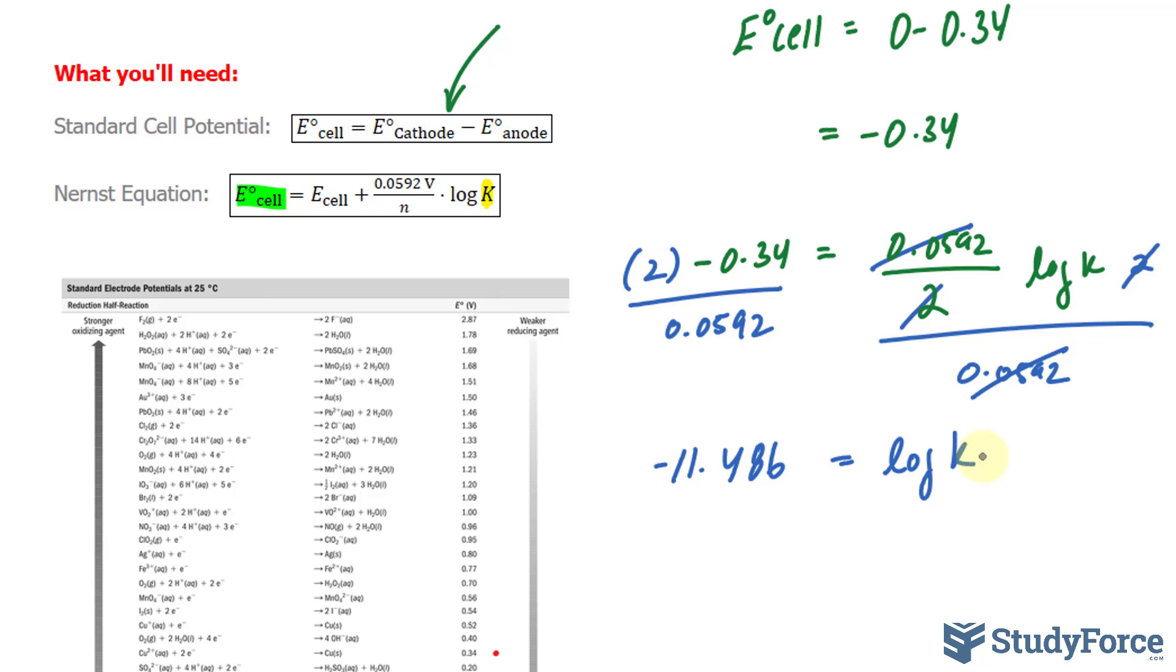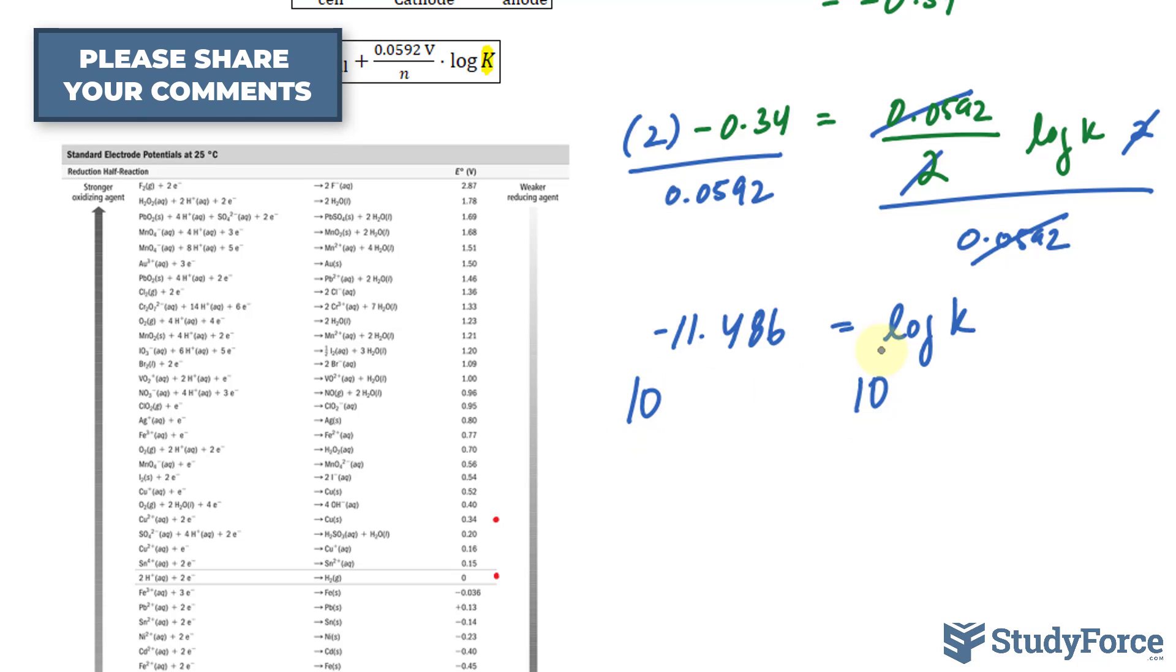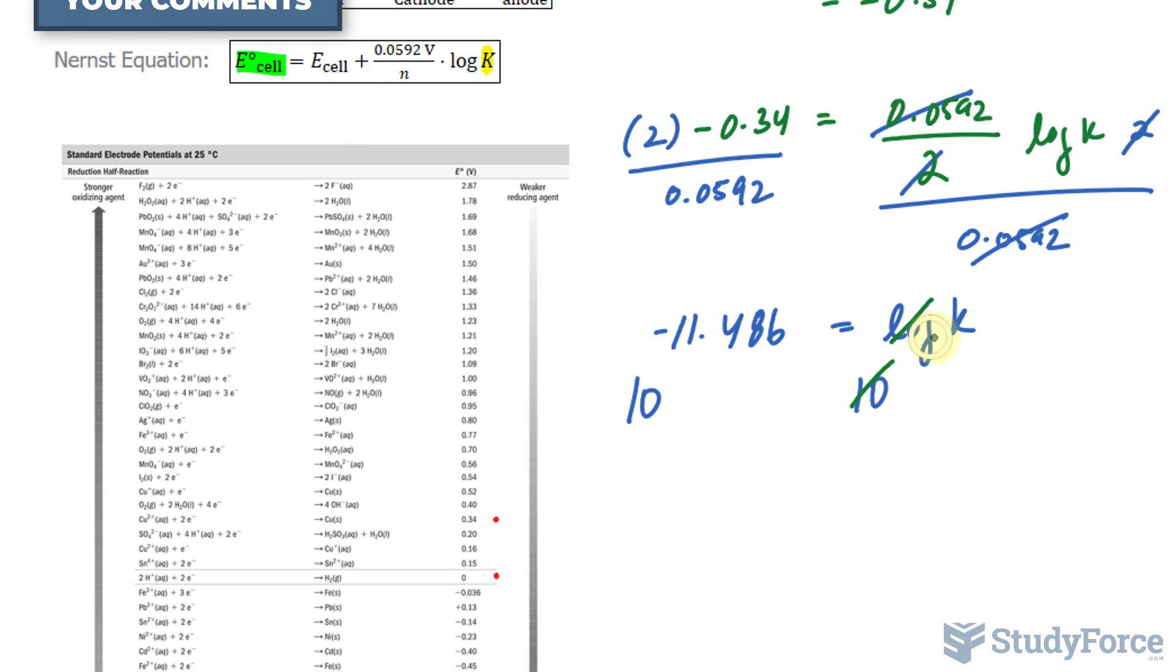is equal to log of K. To isolate for K, we need to raise both of these numbers, both sides, as exponents to the base 10. Because what that will do is cancel out this log. Remember, every log that's written without a base has a base 10, that's why you can do that.